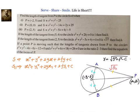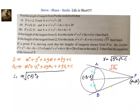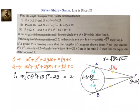Let us go to the first problem: find the length of tangent from P to the circle S = 0 when point P coordinates are given and S is given. We know the length of tangent requires substituting (x₁, y₁) in the circle. So wherever x appears, put −2, and wherever y appears, substitute 5. The first part: x₁² + y₁² = (−2)² + (5)² − 25 = 4 + 25 − 25 = 4, giving √4 = 2.